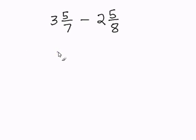Subtracting Mixed Numbers with Uncommon Denominators. In order to do this, we can separate the whole numbers, 3 and 2, and the fractions, 5 over 7 and 5 over 8.